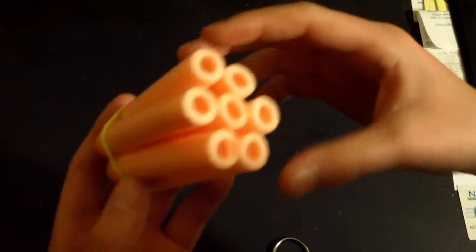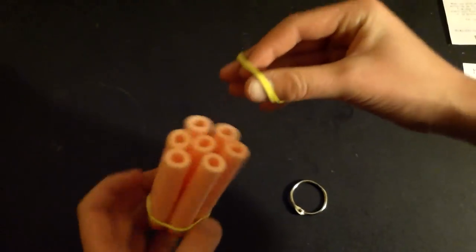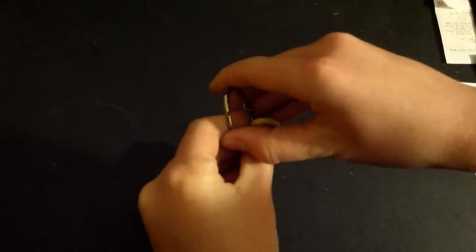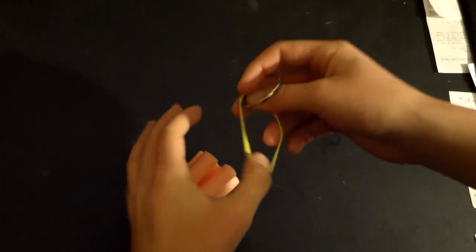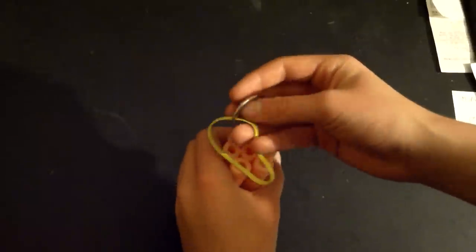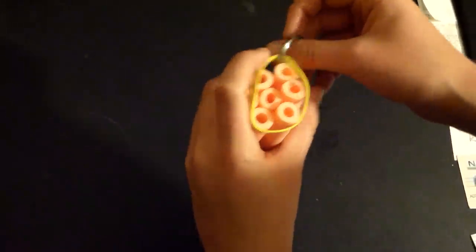Then you need to add this rubber band, attach this clip to the rubber band, and then wrap it around the back of the Nerf Holy Hand Grenade.